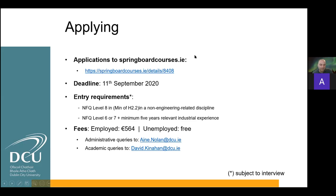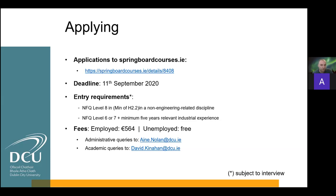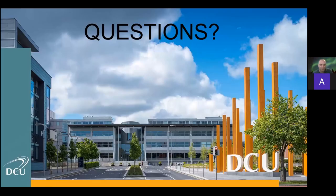The application deadline has been moved to the 18th and may be extended further — we can address that in the Q&A. Entry requirements are a Level 8 degree with a minimum H2.2 in a non-engineering discipline; those applicants are very likely eligible for the Master's course after the HD year. Alternatively, an NFQ Level 6 or 7 qualification with five years of relevant engineering industrial experience is accepted, though those applicants are not eligible for the Master's. Fees are €564 if you're coming from employment; if you're unemployed, the course is free as a Springboard Plus offering. Thank you very much.